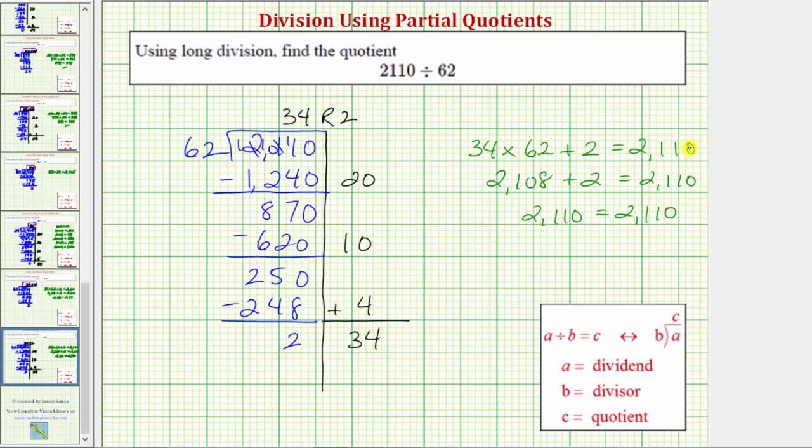Another way to think of this is 2,110 is equal to 34 groups or 34 copies of 62 with 2 left over or with a remainder of 2. I hope you found this helpful.